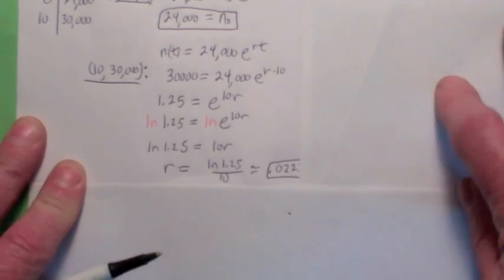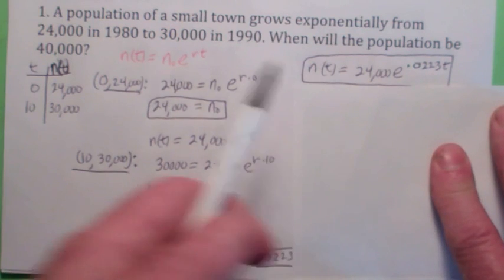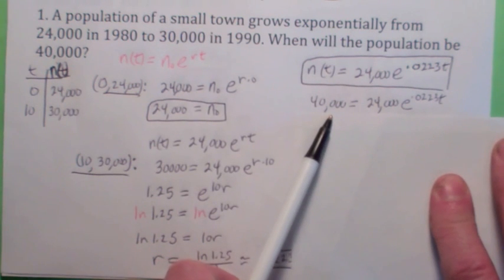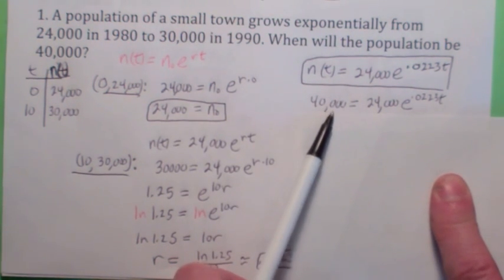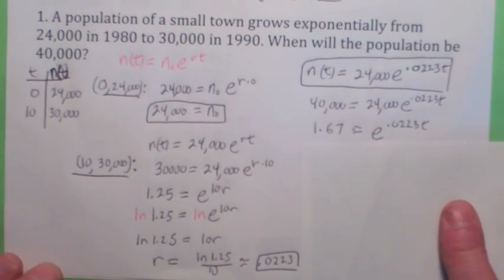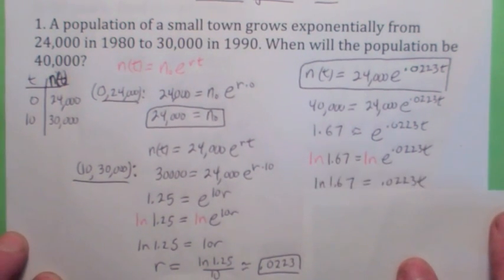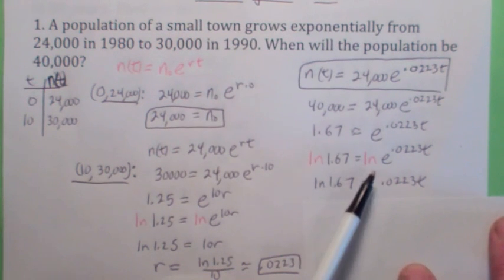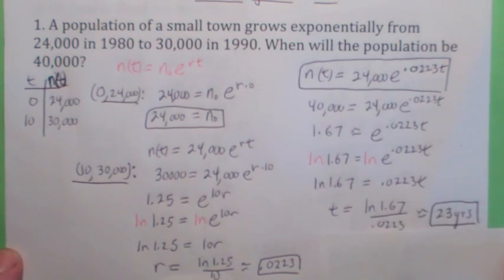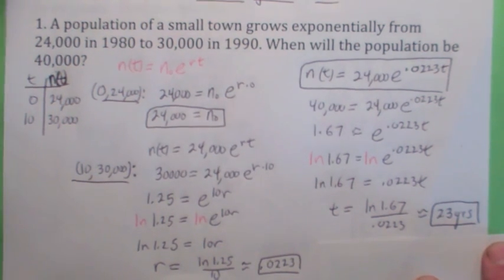Now we have the equation. The goal was to find n-zero and r, and now we can answer the question: find t when the population is 40,000. Set the population equal to 40,000 and solve for t. Divide by 24,000 first, then take the natural log. The right side is just 0.0223t — this is why we use base e, because there's less work. Solving for t, you get t equals about 23 years. That seems like a reasonable answer.